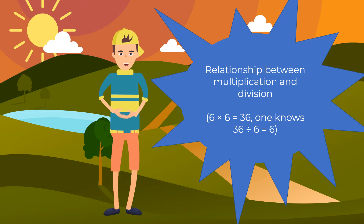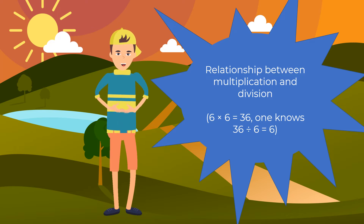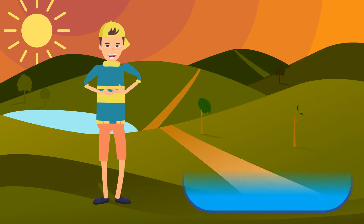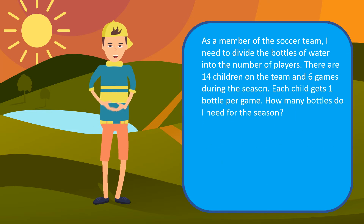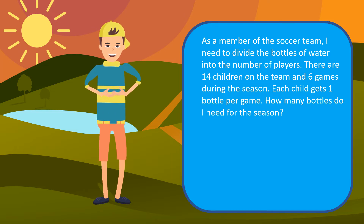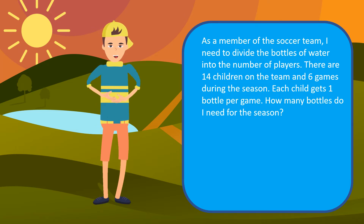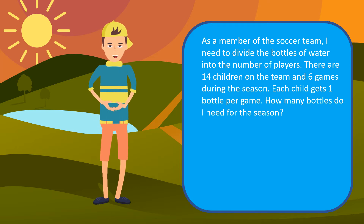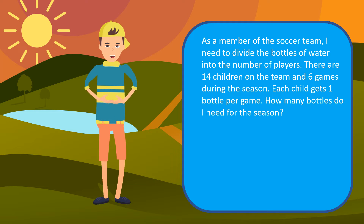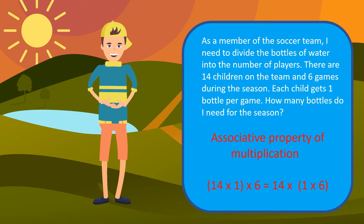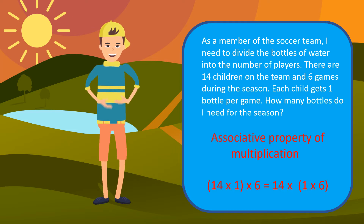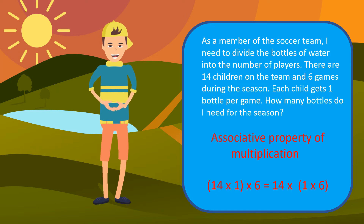Which strategies will you use to solve it? Let's solve this other example together. As a member of the soccer team, I need to divide the water bottles into the number of players. There are 14 children on the team in 6 games during the season. Each child gets 1 water bottle per game. How many bottles do I need for the season? The associative property of multiplication will help in solving this problem: 14 x 1 x 6 equals 14 x 1 x 6. Which strategy will you use to solve it?